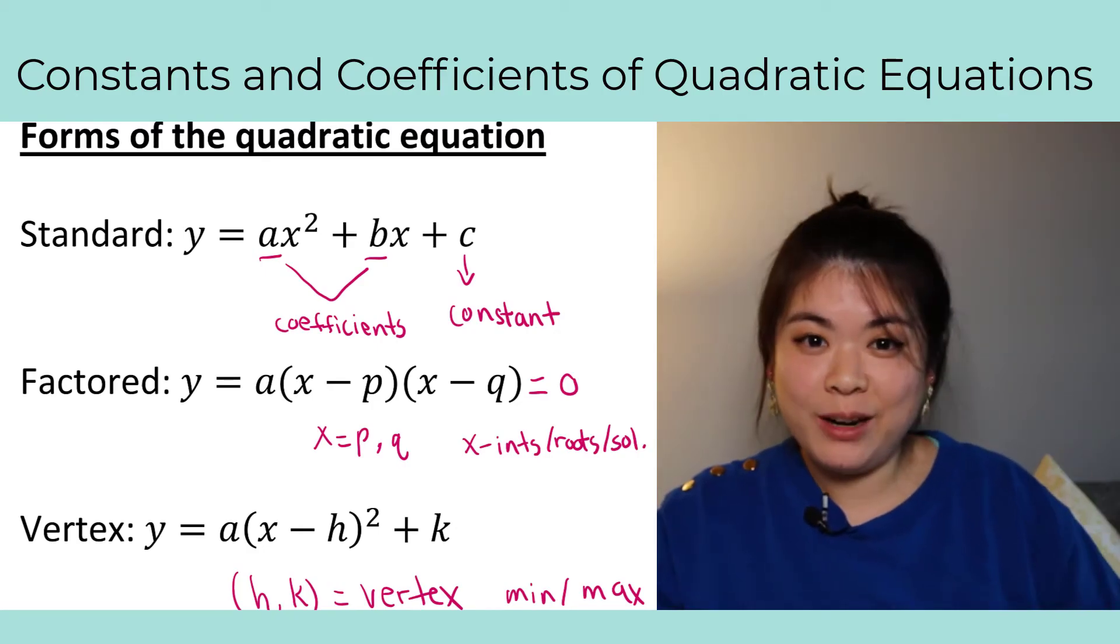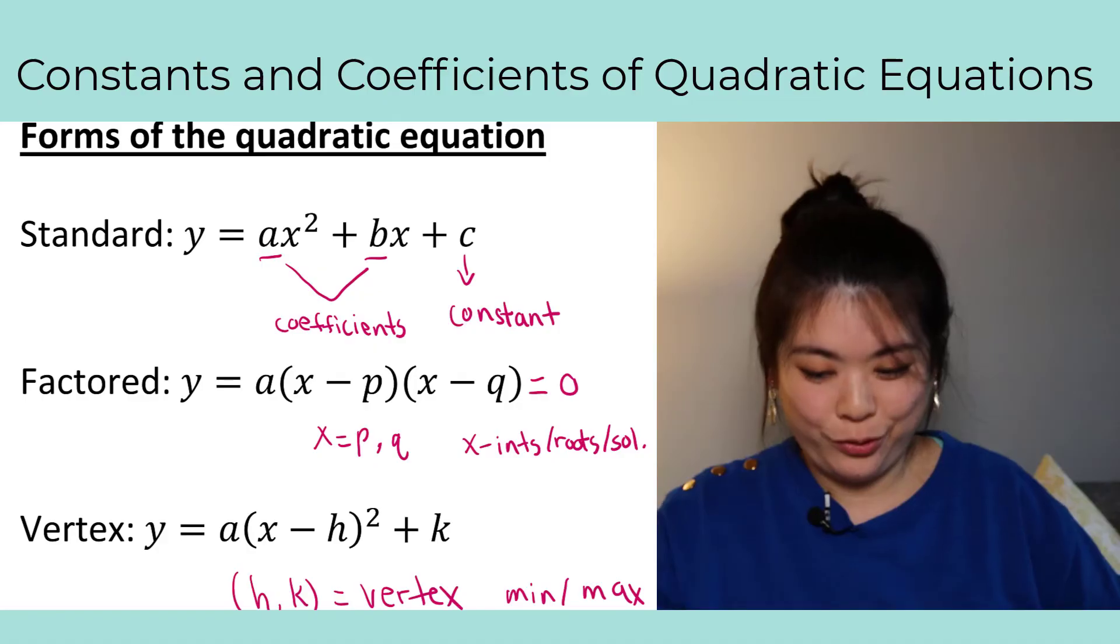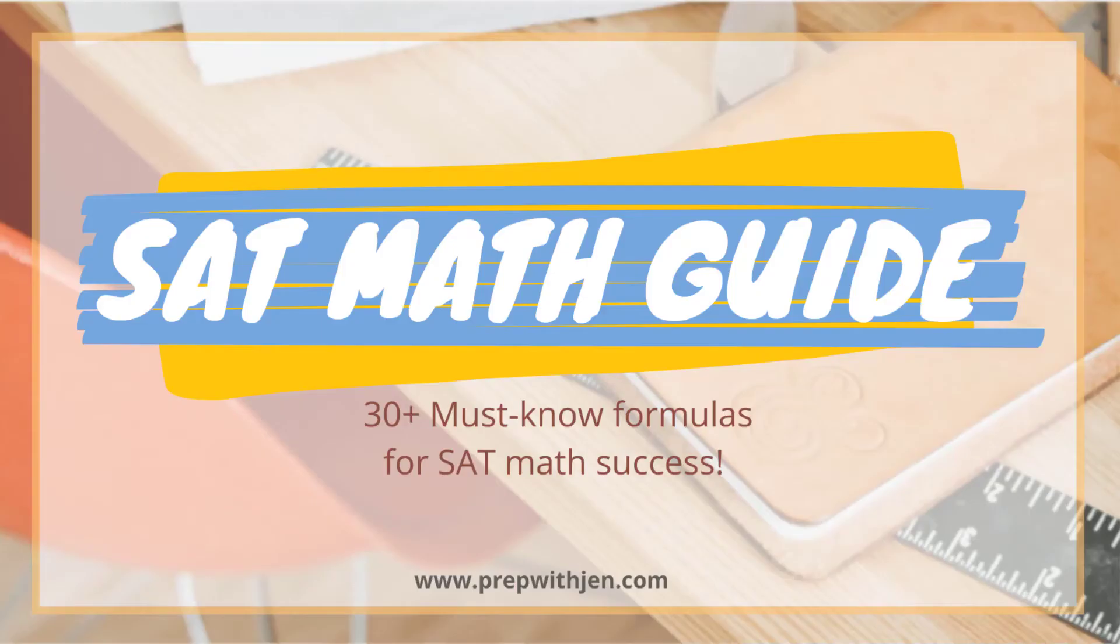Just like before, what we learned that the factored form tells you the x-intercept, the vertex form tells you the vertex, aka minimum or maximum of your parabola. Hey guys, I just want to pop in here to say I've actually made a list of all of the most common SAT math formulas. You can grab that for free on my website. All you have to do is sign up for my newsletter. I will leave the link to that in the description box below. If you sign up, you'll have access to my free resource library. All right, back to the video.